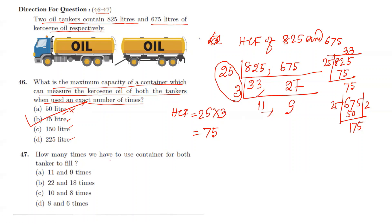How many times we have to use the container for both the tankers to fill? Options: 11 and 12 times, 22 and 18 times, 8 and 8 times, 8 and 6 times. For first one you have to go for 11 times, for second you have to go for 9 times. So C is answer.